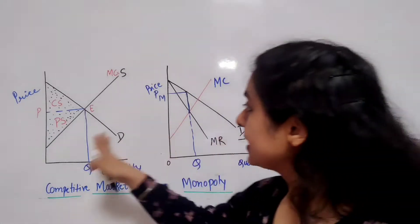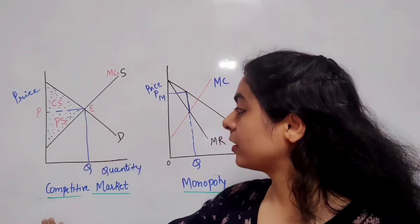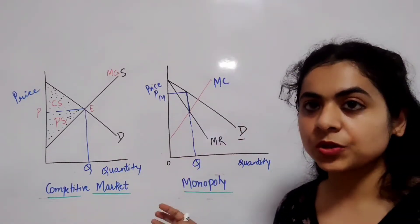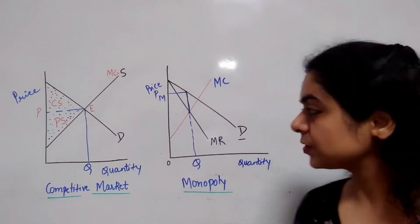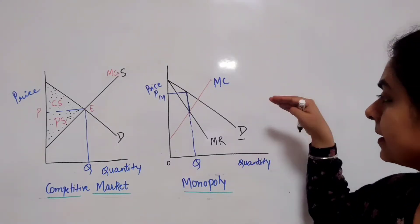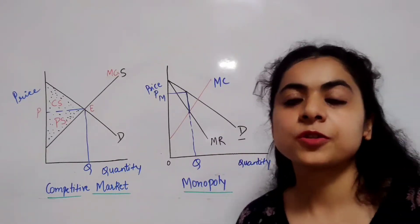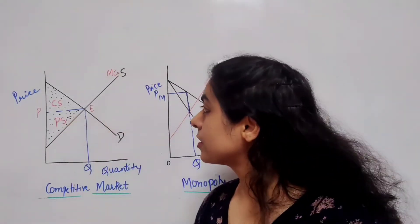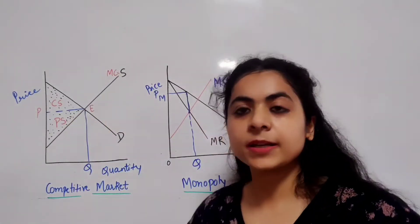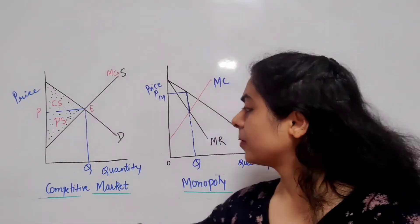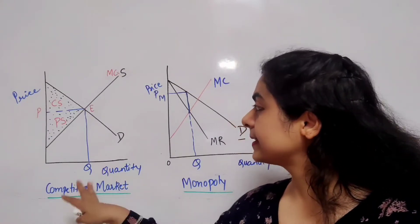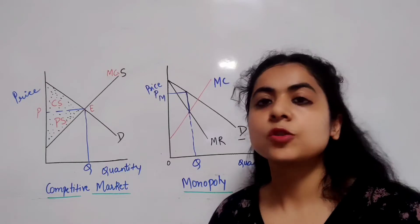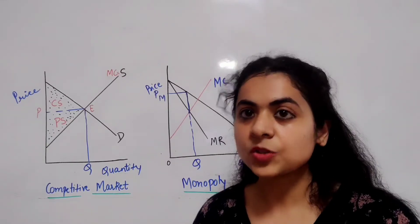Price is equal to marginal cost for a competitive market. The same is not true for a monopolist — there is no supply curve for a monopolist, and the price is not equal to marginal cost. The sum of consumer and producer surplus is maximum in the case of a perfectly competitive market, and we can say that economic efficiency is maximized when the sum of consumer and producer surplus is maximized.